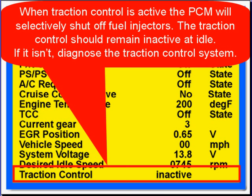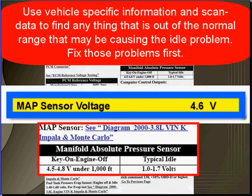When traction control is active, the PCM will selectively shut off fuel injectors, causing an idle problem. Traction control should remain inactive at idle; if it isn't, diagnose the traction control system. Use vehicle-specific information and scan data — this will help you find anything that's out of normal range that may be causing your idle problems.